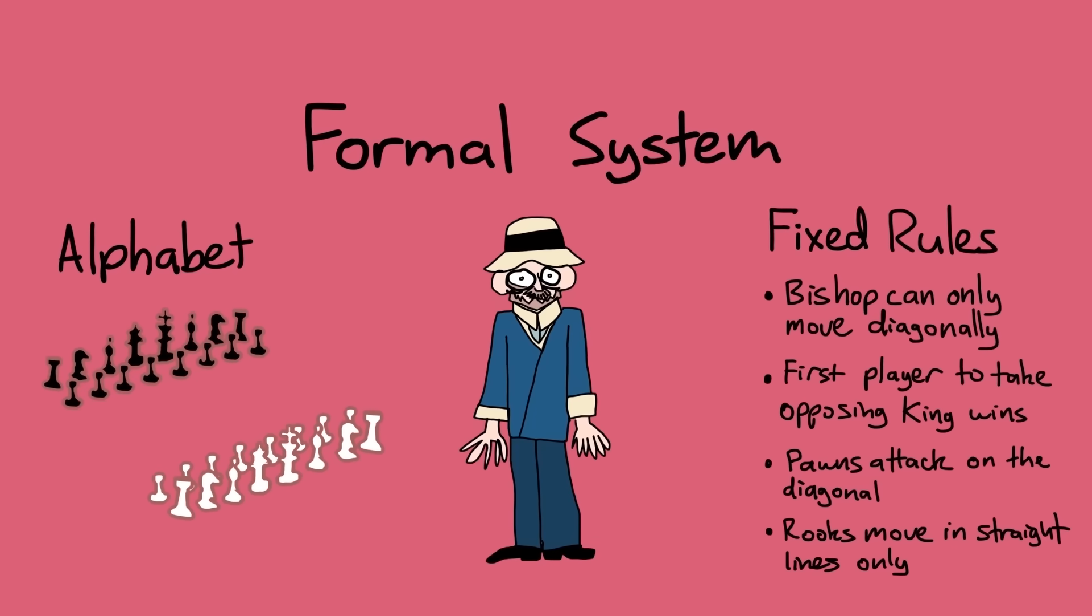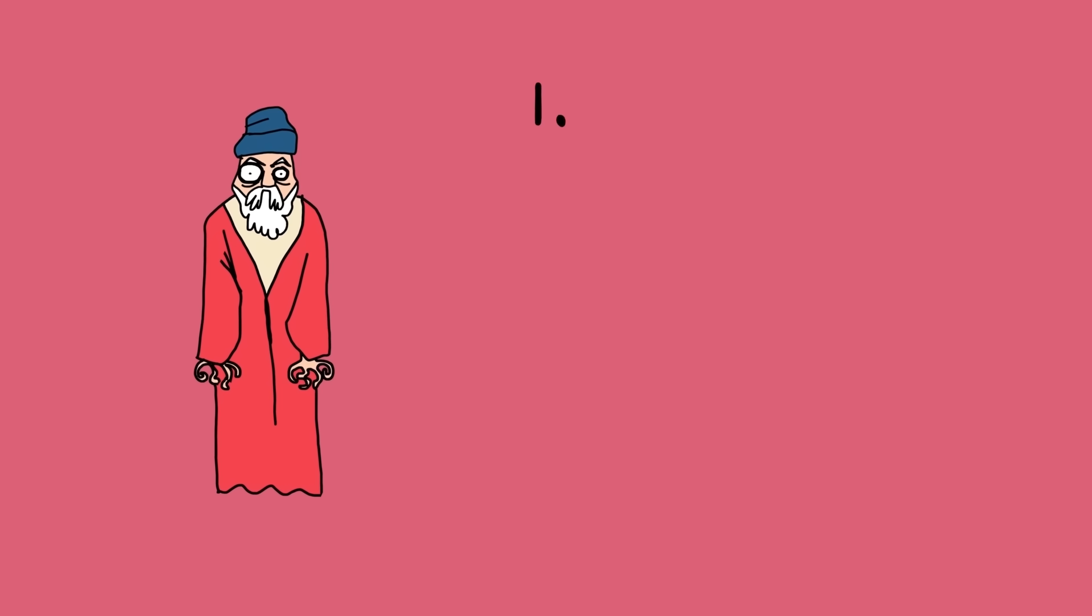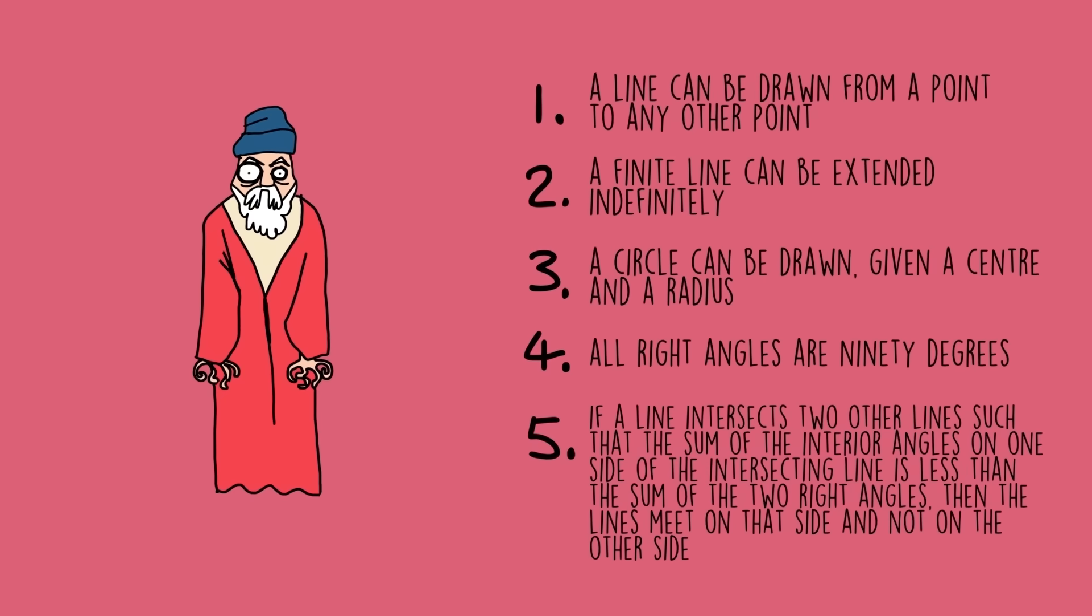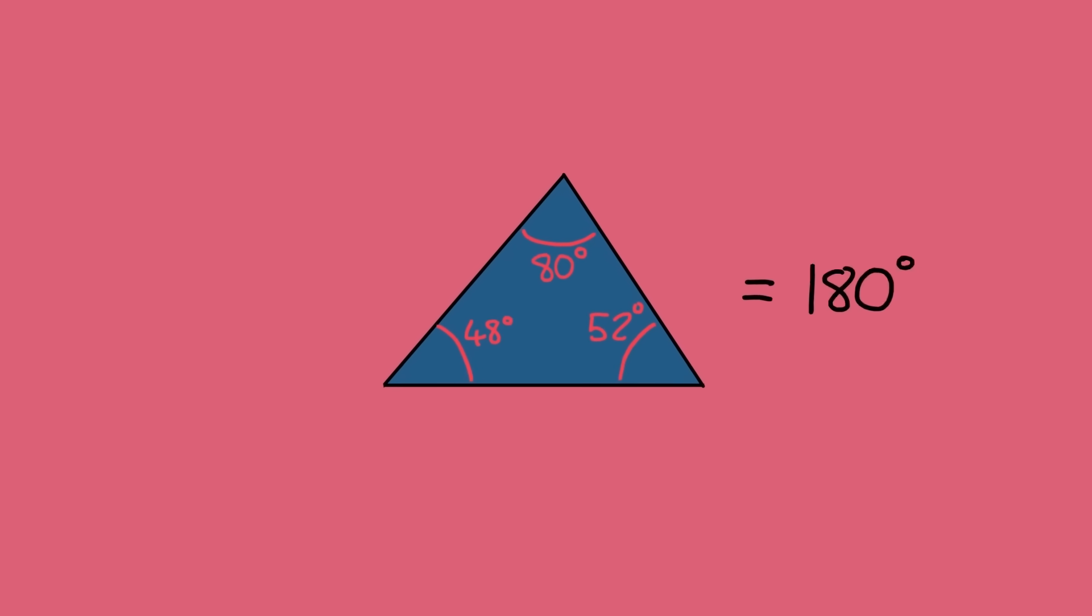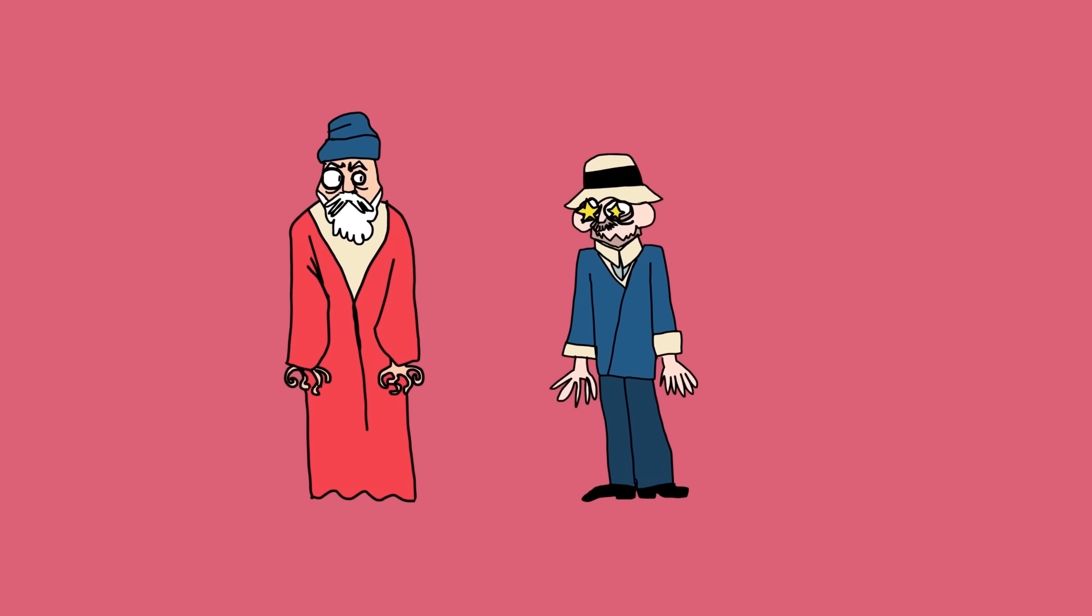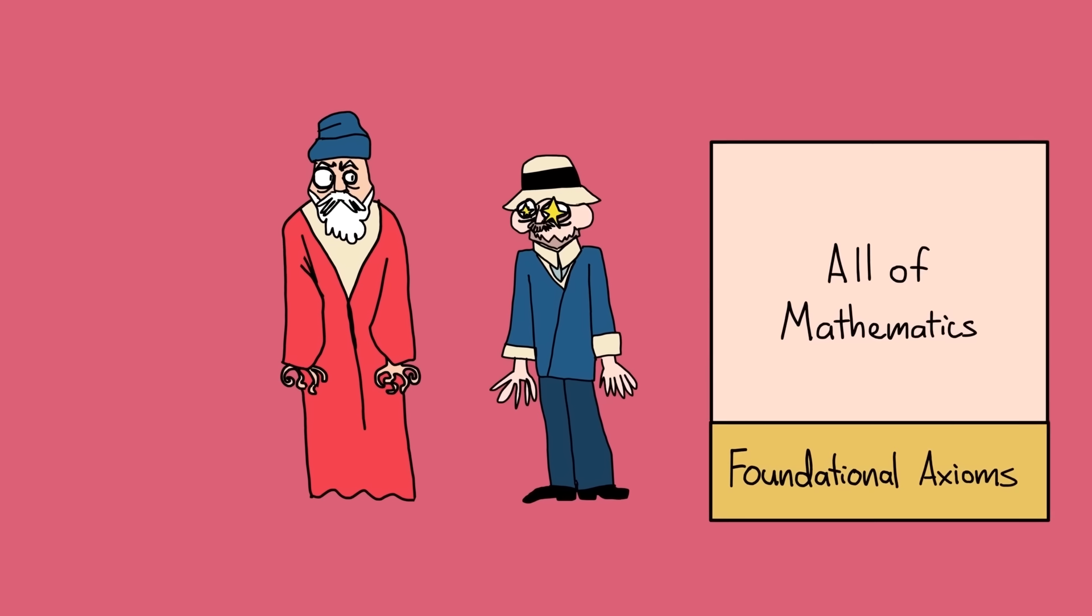Hilbert thought that this was how we should view mathematics. Something similar had been done by Euclid on a much smaller scale some 2,000 years earlier. By putting forward five self-evident axioms and the rules of how to build upon them, the whole system of Euclidean geometry was born. Equipped with these axioms, we don't need to know whether a triangle lives in the world of forms or in our heads to know that its angles always add to 180 degrees. So in this way, Euclidean geometry can be seen as a formal system. Hilbert wanted to do something similar. To find the foundational axioms for a formal system for which all of mathematics could be built upon.